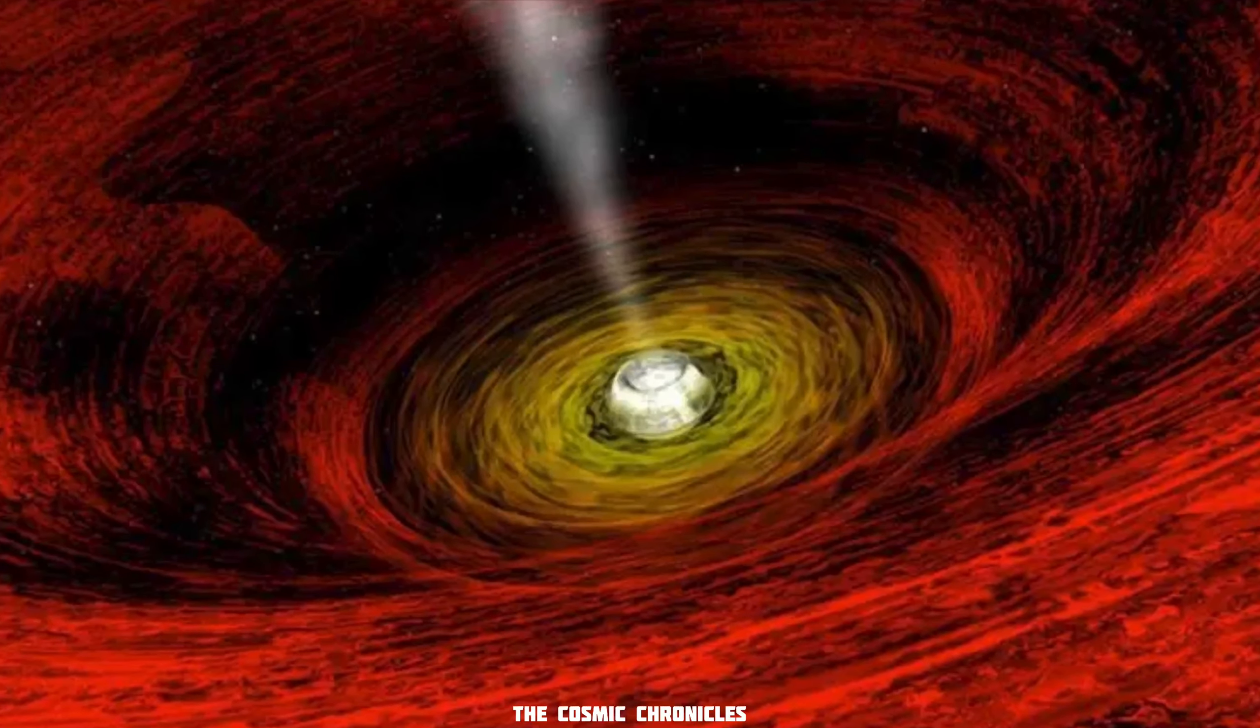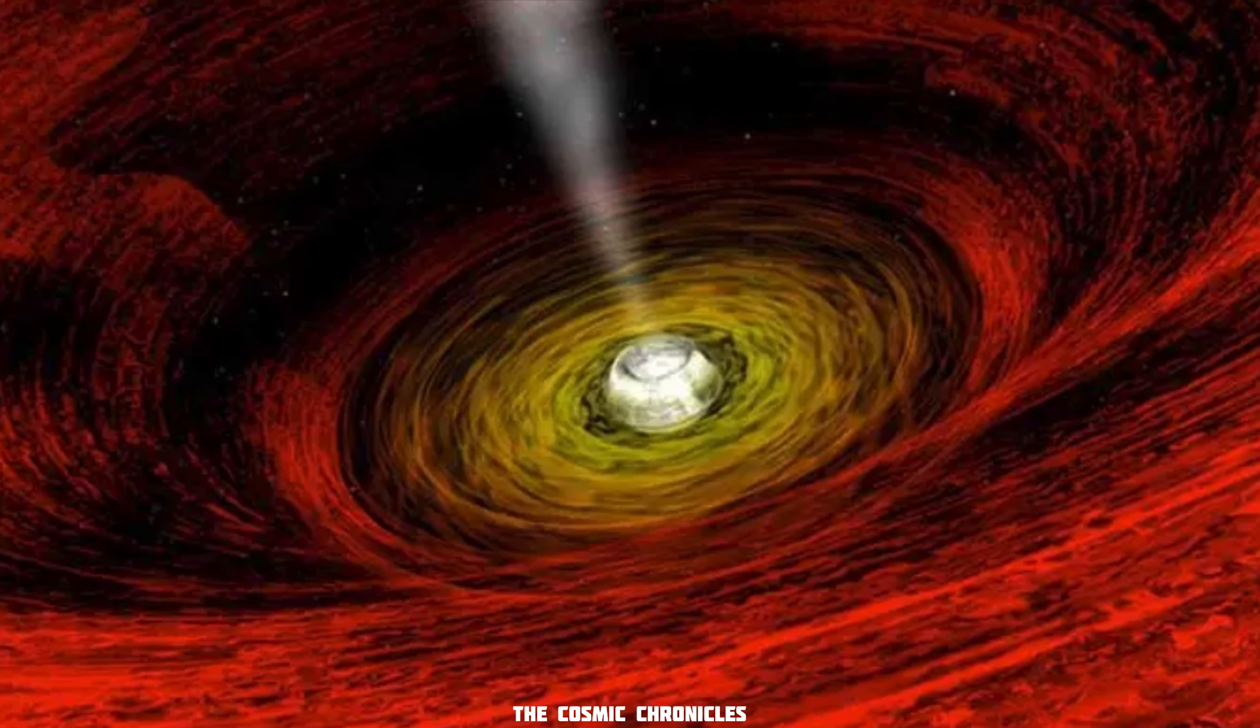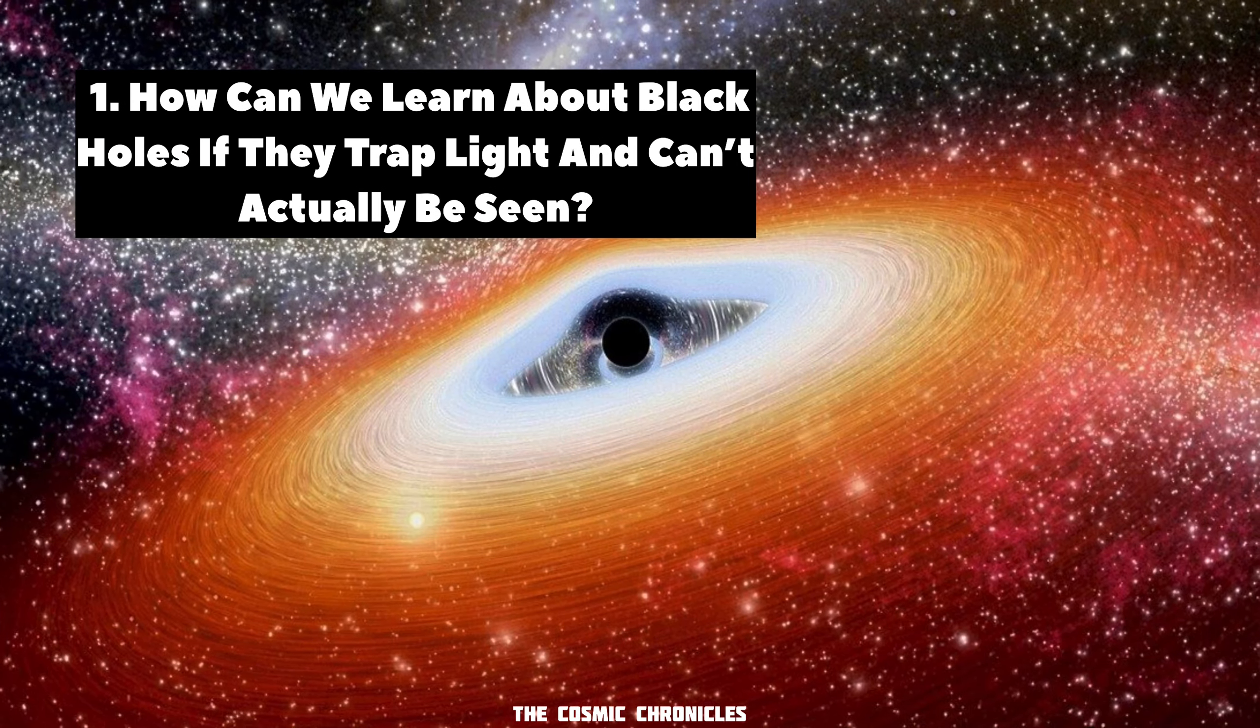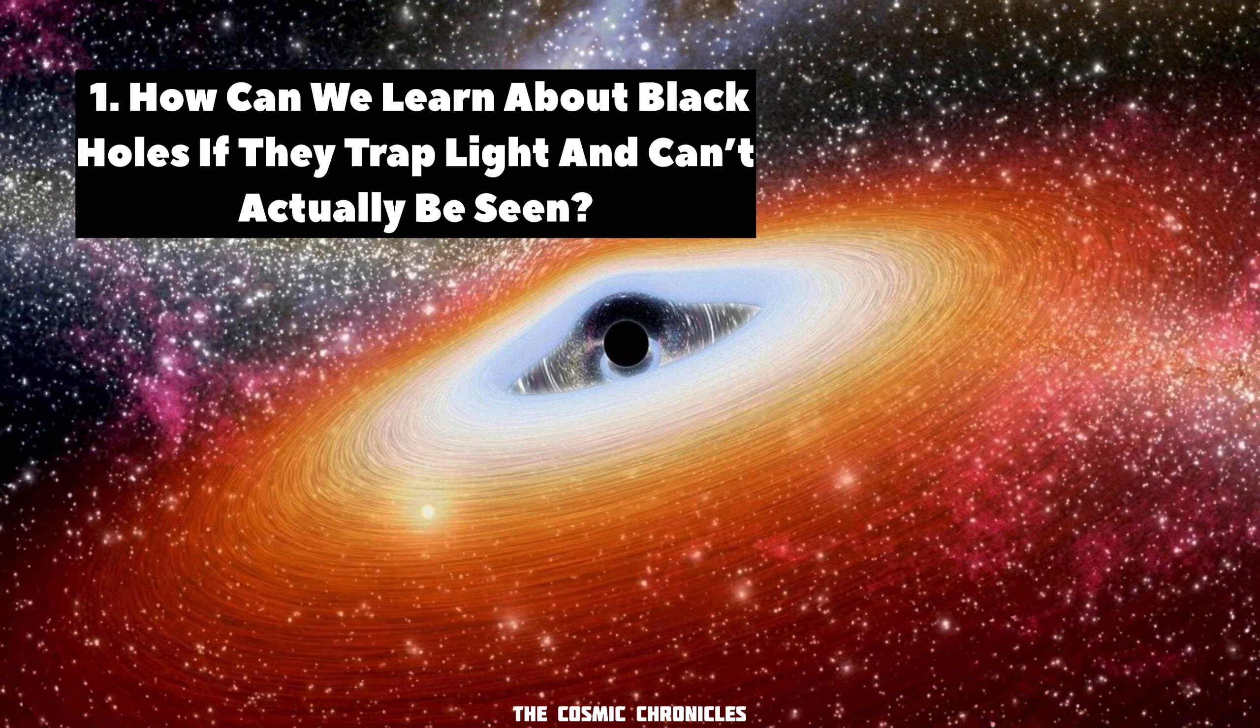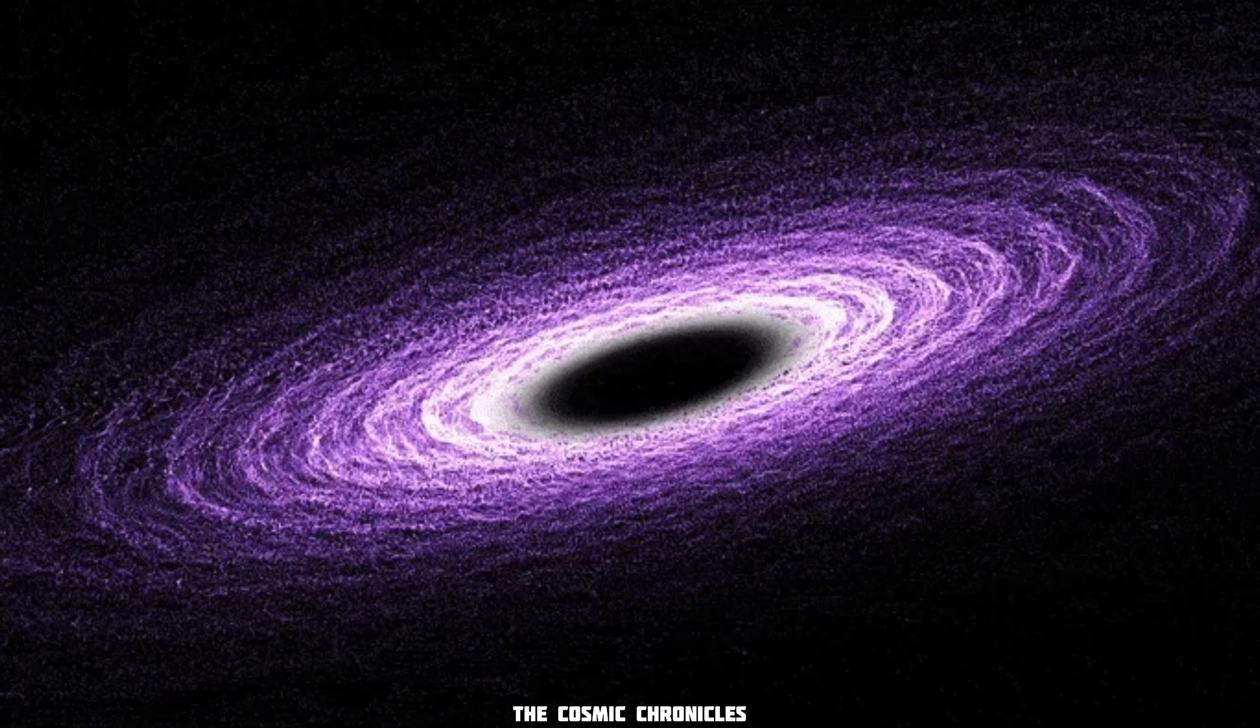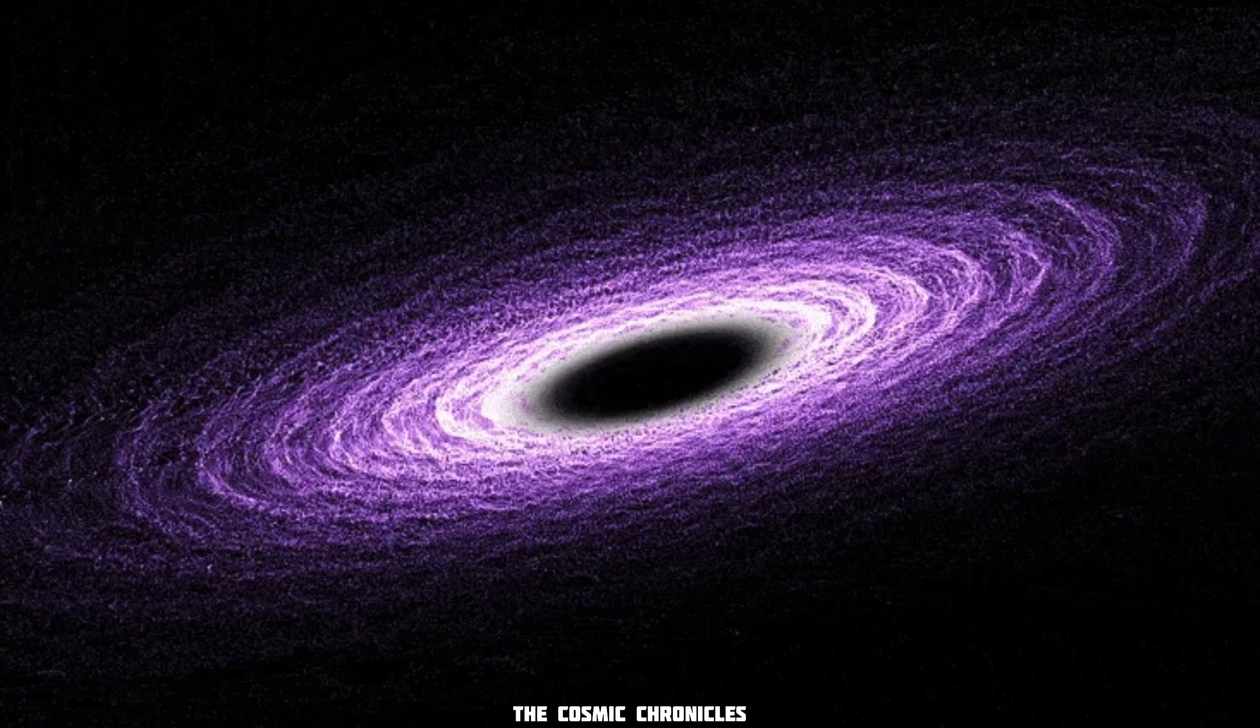A black hole's gravity is so powerful that it will be able to pull in nearby material and eat it. Question 1: How can we learn about black holes if they trap light and can't actually be seen? No light of any kind, including x-rays, can escape from inside the event horizon of a black hole, the region beyond which there is no return.